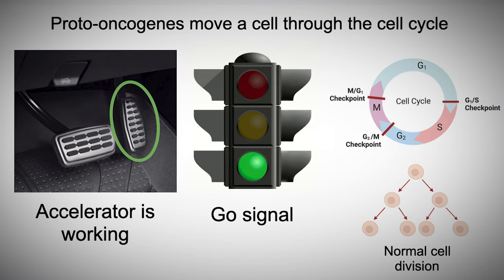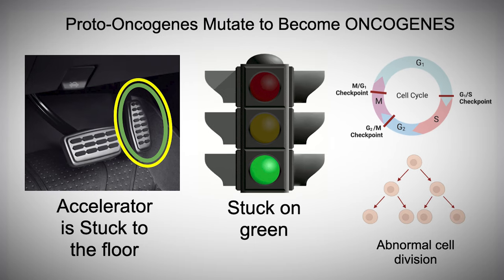Proto-oncogenes act like a gas pedal — a gas pedal moves a car forward. In the same way, proto-oncogenes enable the cell to move forward through the cell cycle. But when proto-oncogenes mutate, they can become oncogenes. Oncogenes cause cells to divide when they shouldn't, which can lead to uncontrolled growth that can lead to cancer. It's like the gas pedal of a car is pinned to the floor — the car is accelerating even when it shouldn't.